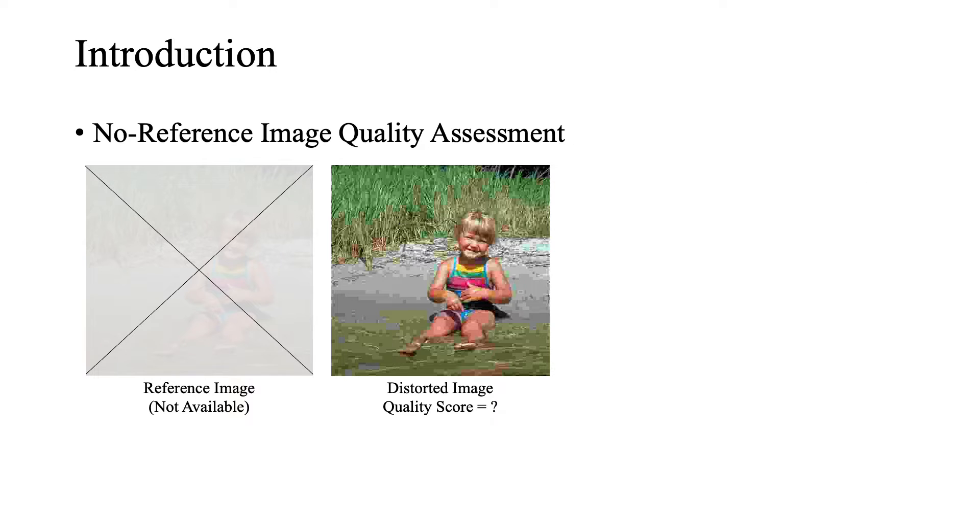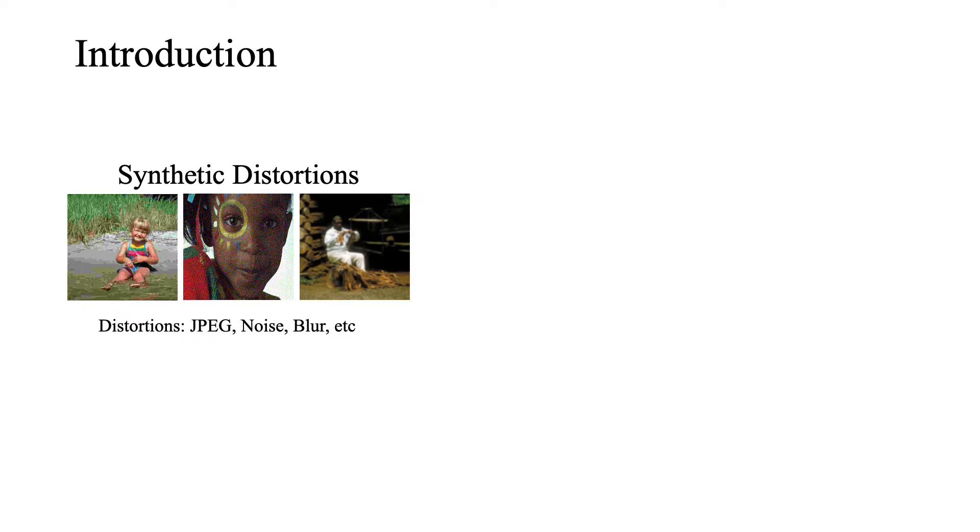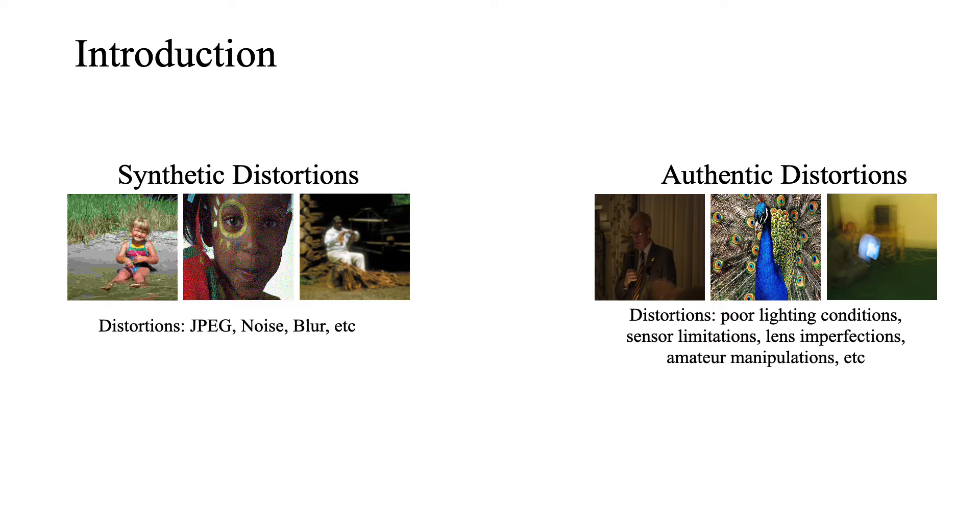However, the main challenge with NRIQA is due to the absence of the reference image. NRIQA methods can be applied on images that are distorted by using synthetic distortions such as JPEG, Noise, Blur, where the degeneration process can be simulated in the laboratory environments. They also can be applied on the images with authentic distortions which have more complex distortions such as poor lighting conditions or sensor limitations, which often happen in real-world images and are more complicated.